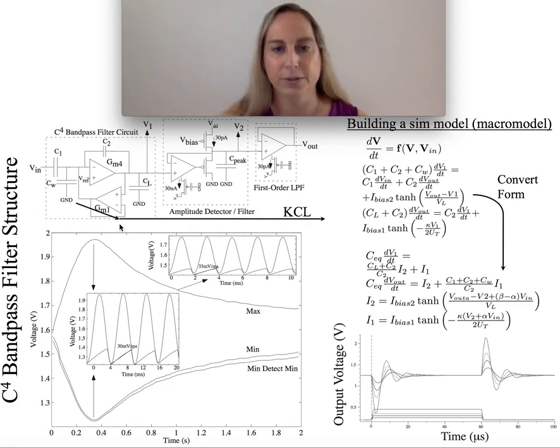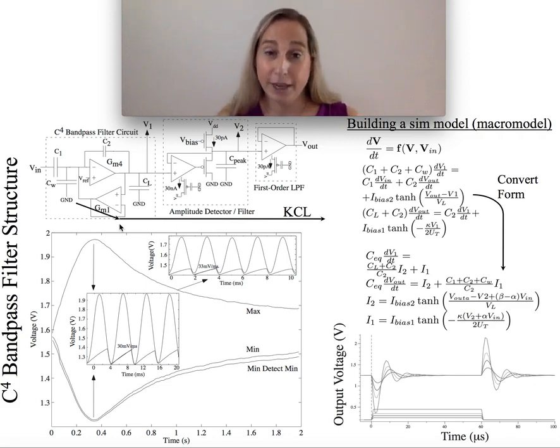This is called a C4 capacitor coupled current conveyor, and it's basically a two OTA structure, or it could be done with two simple amplifiers depending on different approaches. In an FPAA domain, we have plenty of OTAs, so we typically use that.